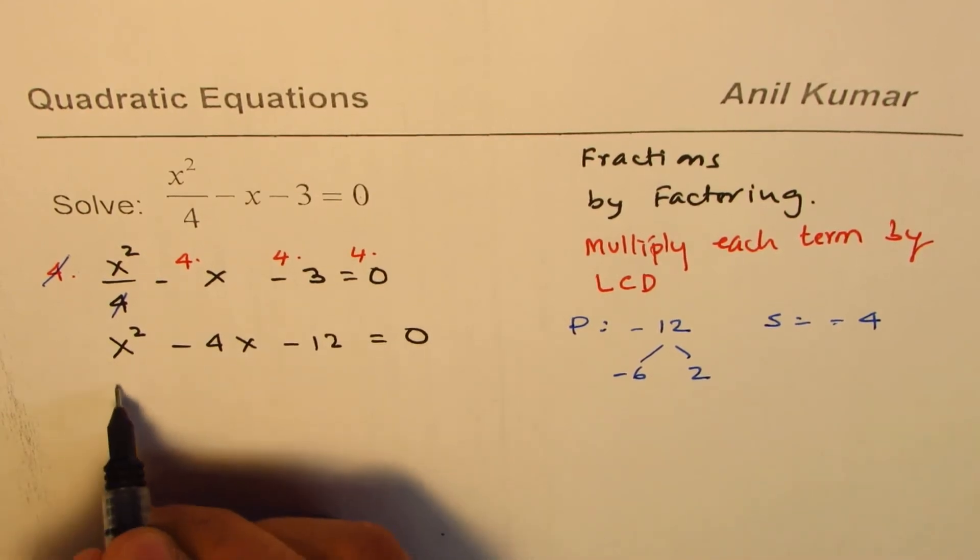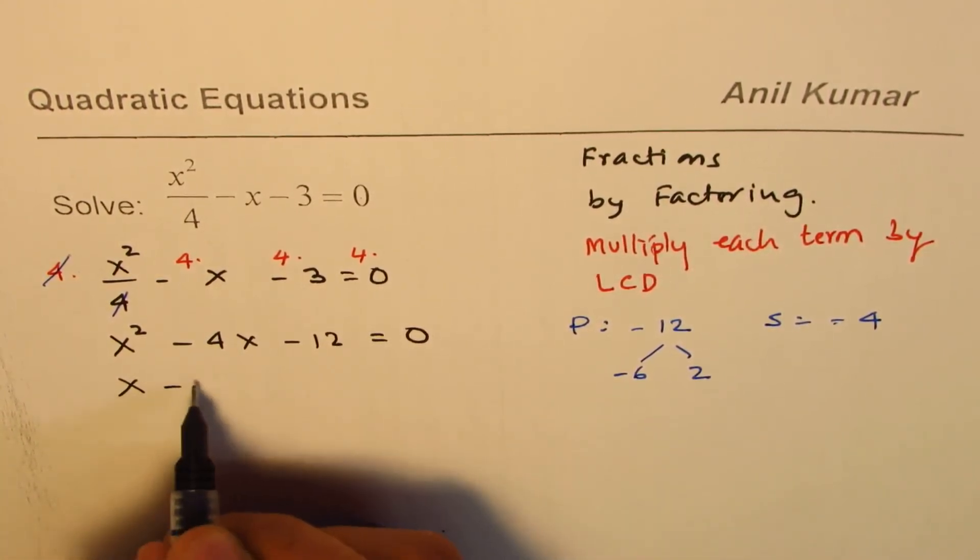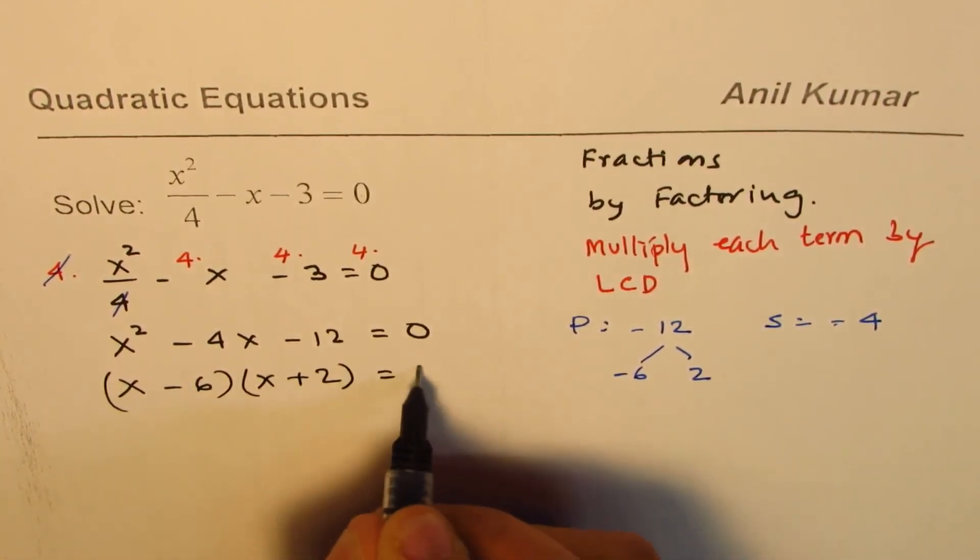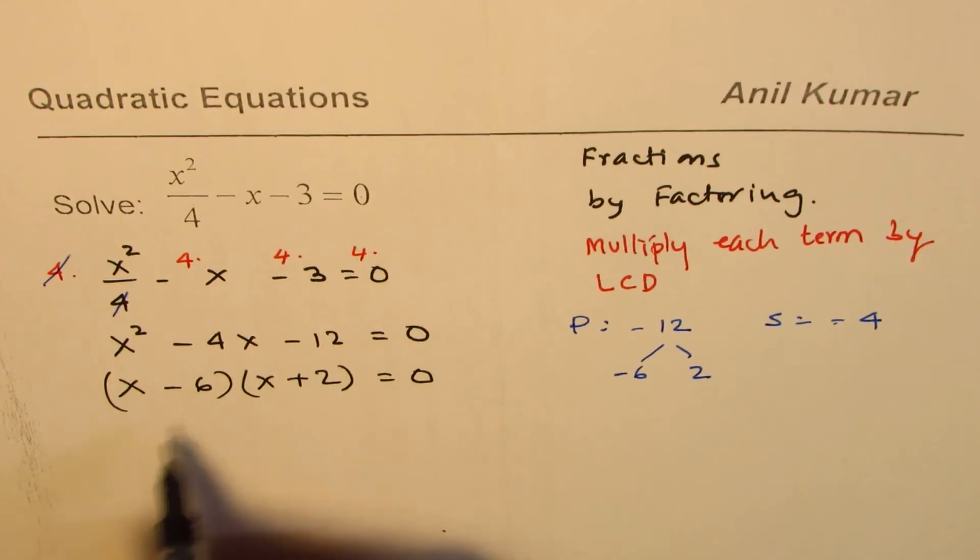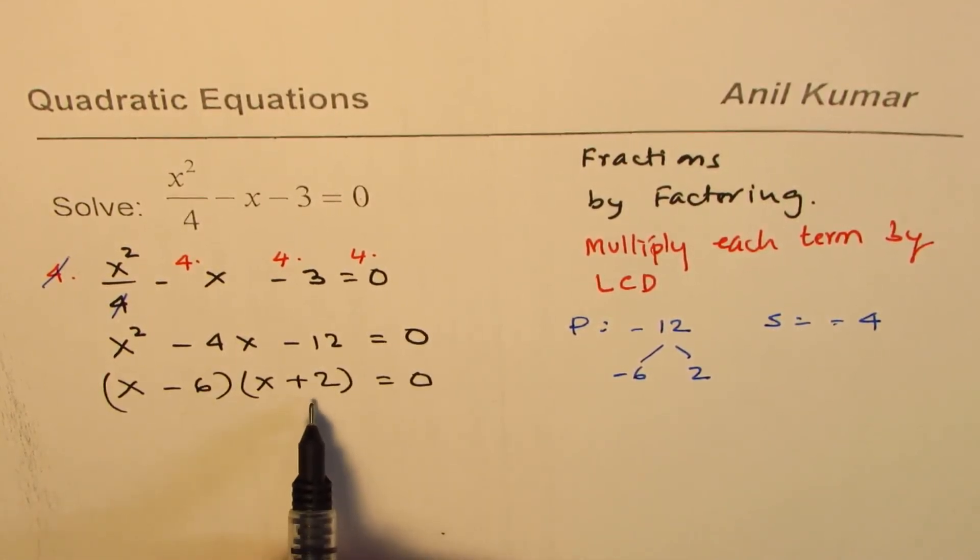So once we have these numbers we can write this in the factored form which would be x minus 6 times x plus 2 equal to 0. Now in the factored form you know each factor could be 0 to provide us with the correct solution.